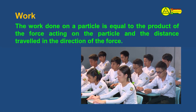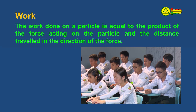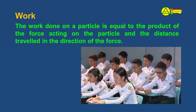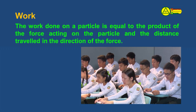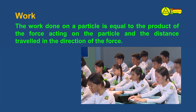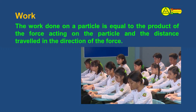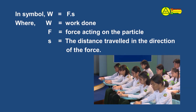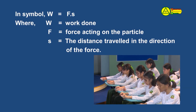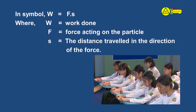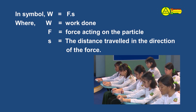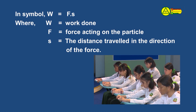Now let us know the definition of work. The work on the body is equal to the product of the force adding on the body and the distance traveled in the direction of the force. So here we have a few examples. W equals Fs. W equals W, then F equals force adding on the body, s equals the distance traveled in the direction of the force.